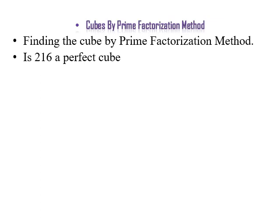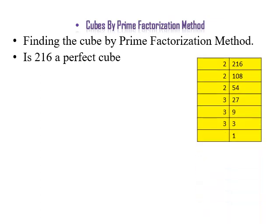Let's see: the first example is — is 216 a perfect cube? Now let's see how to solve this example. First, we have to find out the prime factors of 216 by the prime factorization method.